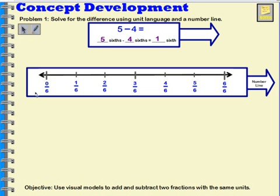It's going to work the same way. I have 5 sixths, so I'm going to mark that on my number line. And I would jump back 4 places and I would land at 1 sixth.